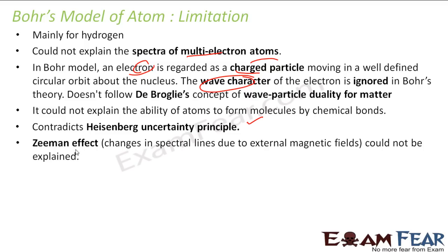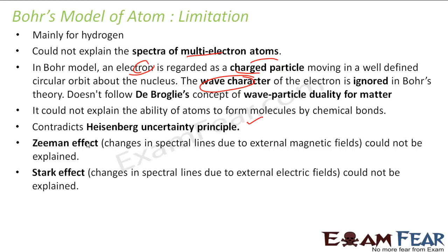The Zeeman effect — which is the deviation in spectral lines due to a magnetic field — could not be explained. Also, the Stark effect — the change in spectral lines due to an electric field — that also could not be explained. We will talk about the Zeeman and Stark effects later.